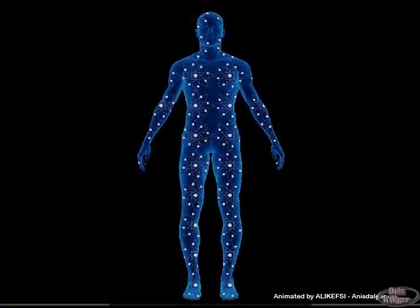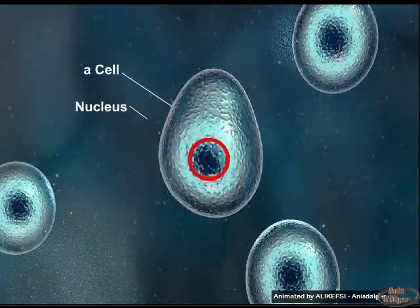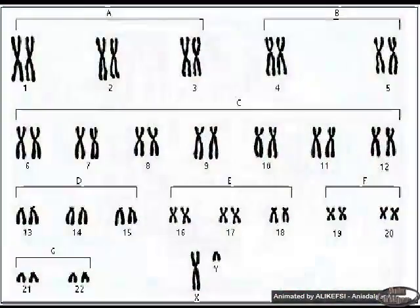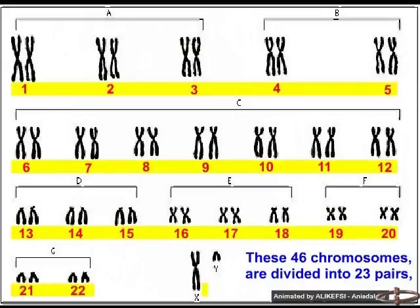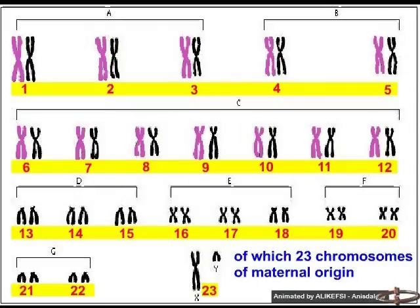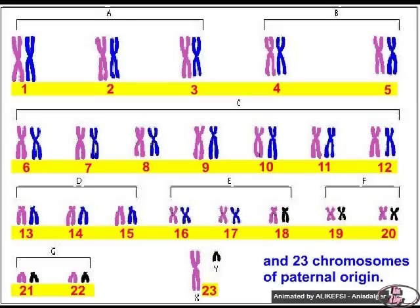The human body is composed of billions of cells. Each cell contains a nucleus, and in each nucleus there are 46 chromosomes, where all the genetic information of the human body is stored. These 46 chromosomes are divided into 23 pairs, of which 23 chromosomes are of maternal origin and 23 chromosomes are of paternal origin.